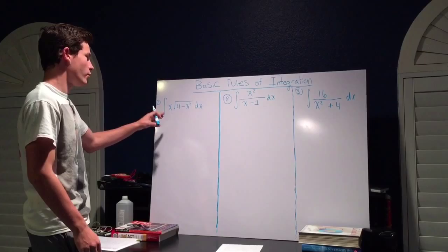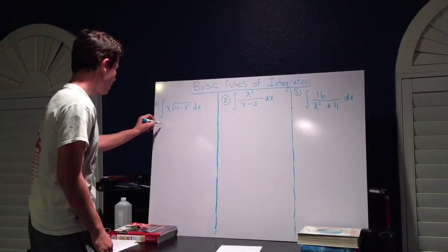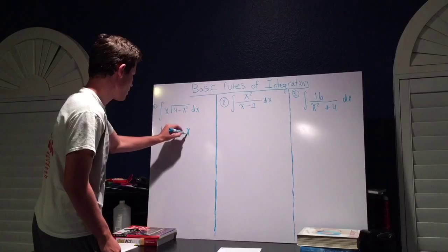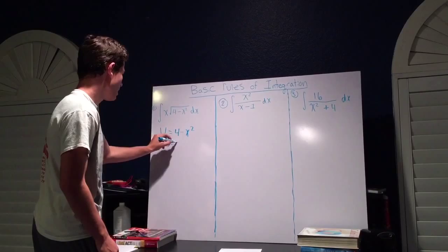We're going to use a method called u-substitution, where we're going to let u equal 4 minus x squared. And then we're going to find du, which will equal negative 2x dx.